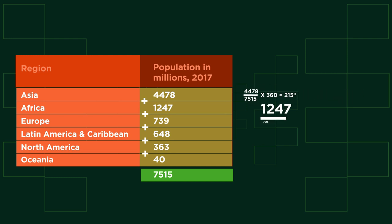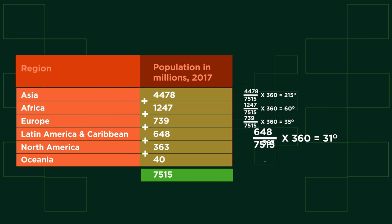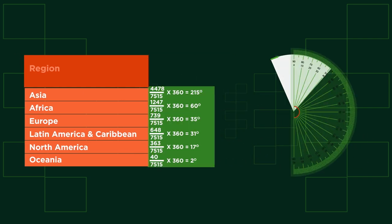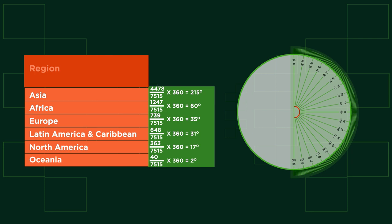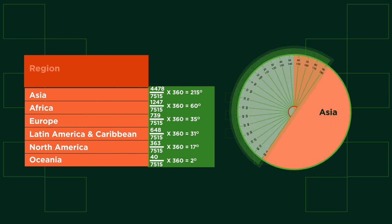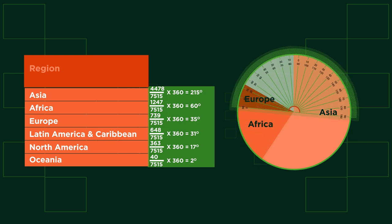Then we calculate Africa, Europe, and the rest. With your protractor, you can now divide your pie chart up by these degrees. Starting from the vertical, measure 215 degrees clockwise and label this sector Asia. Then measure 60 degrees and label Africa. Then 35 degrees for Europe.